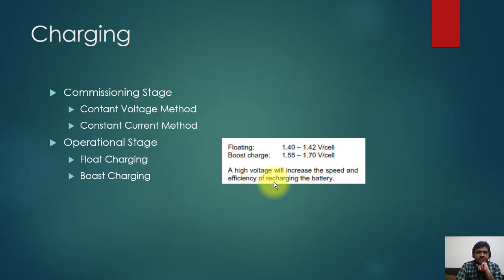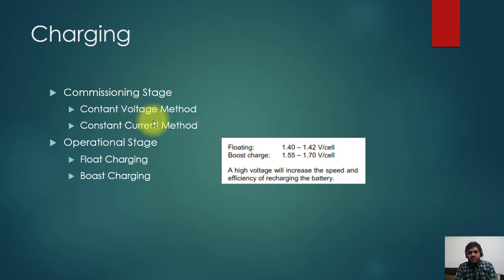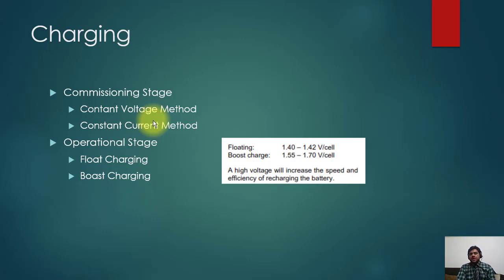There are two stages: commissioning and operational. During the commissioning stage, you must charge the batteries for the first time — this takes considerable effort if they have never been charged before. You can use the constant voltage method, where voltage is kept constant and current varies, or the constant current method, where current remains constant and voltage varies. In the operational stage, there are two charging methods: float and boost. Normally the battery remains on float charge. The float charge voltage per cell is approximately 1.4 volts. The boost charge voltage is higher, around 1.55 to 1.7 volts. If the battery voltage drops below a set level, the charger automatically switches from float to boost, then returns to float once charged.